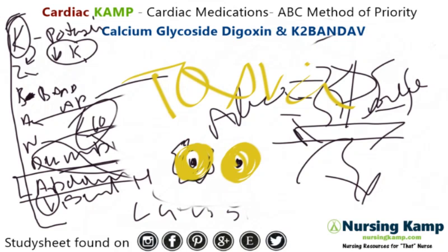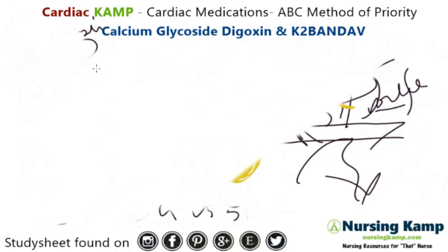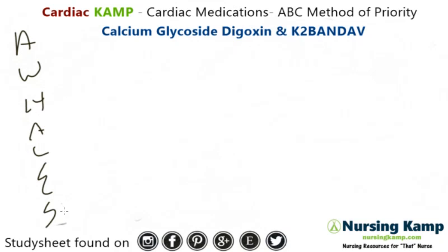Now let's run through it with A-WHALES. A-WHALES is a method I use to identify what I might be missing in teaching or studying this content. First question: is it acute or is it chronic? Well, digoxin is a chronic medication that has acute toxic levels. Those levels, when we talked about K2BandieAV — that's the mnemonic.